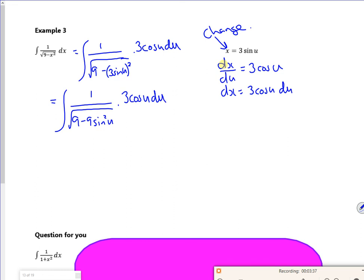Now, the 9 minus 9sine squared, you can actually see as, are you ready for this? 9 times 1 minus sine squared, times by 3cos u du. The 1 minus sine squared is cos squared. So I've got 1 over 9 square root of, oh no, I've got 9s inside the square root.